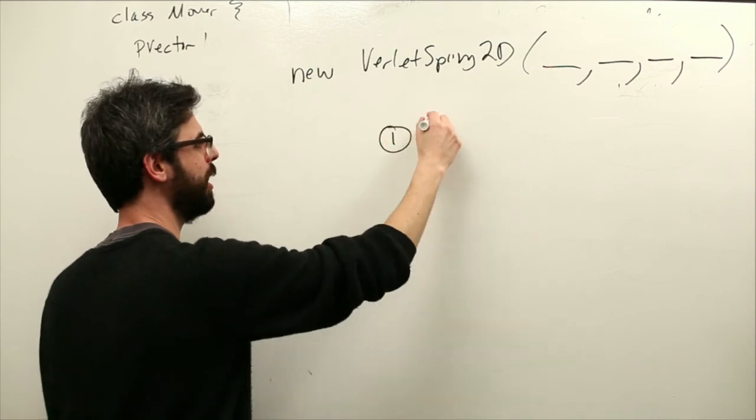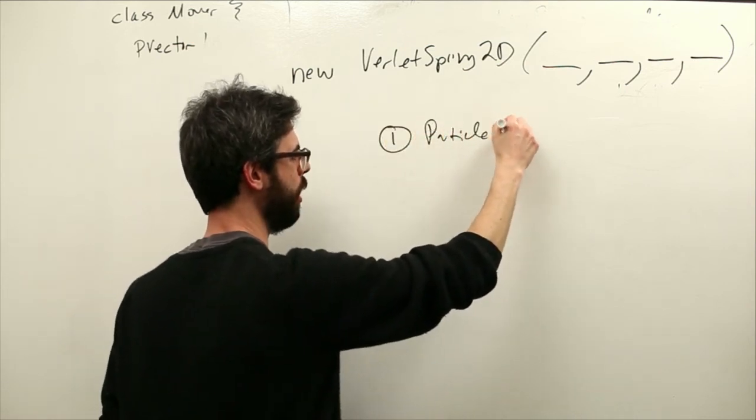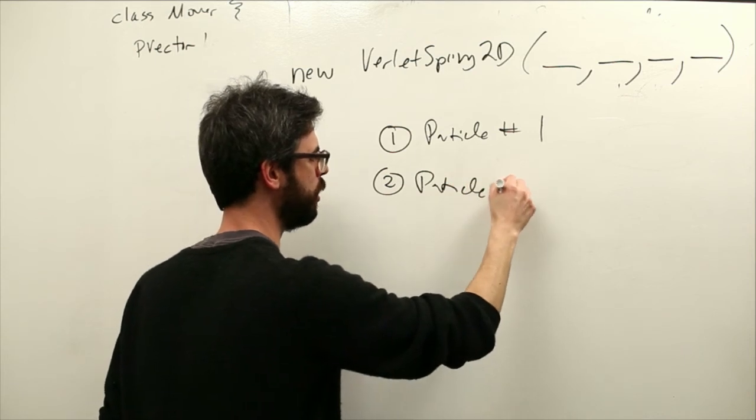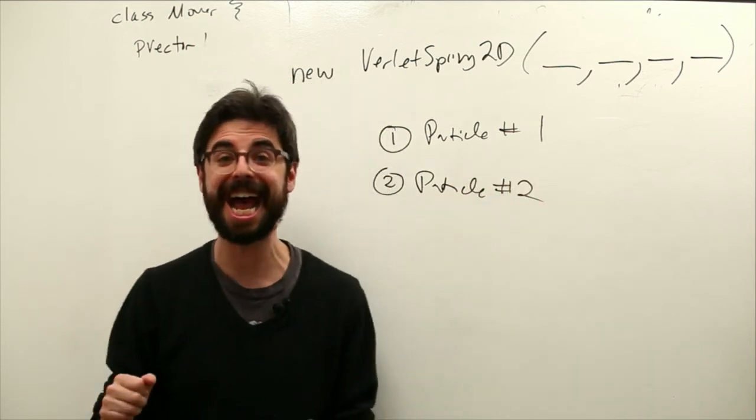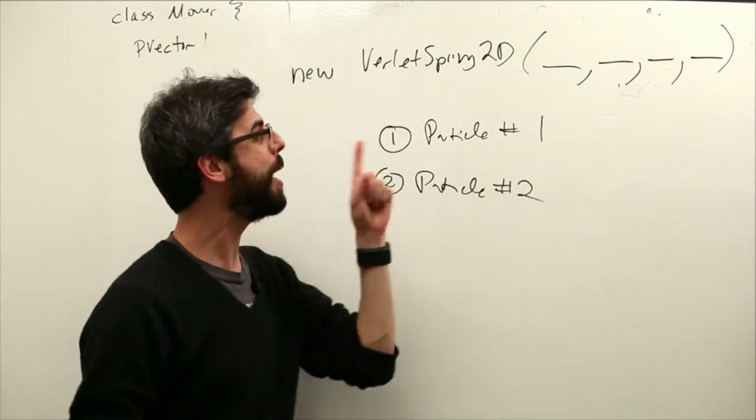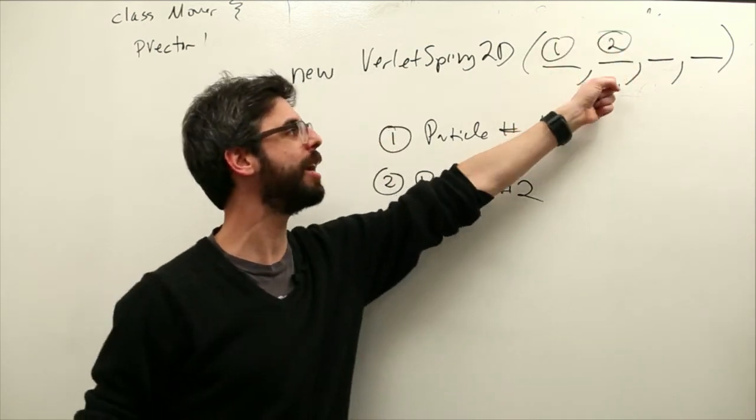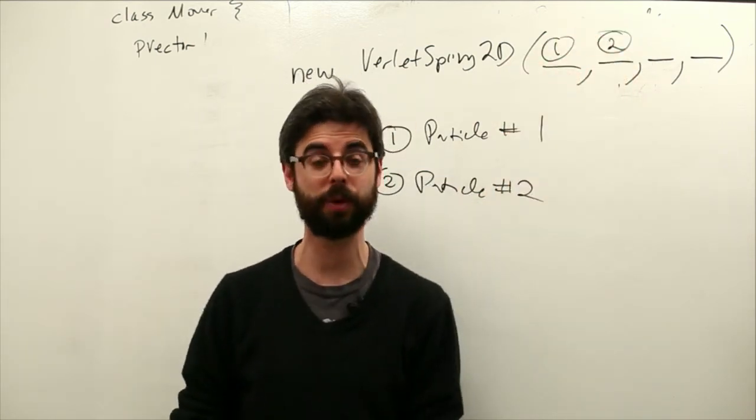So what is a spring? One thing we need is particle number one. Another thing we need is particle number two. So a spring has to connect two particle objects.